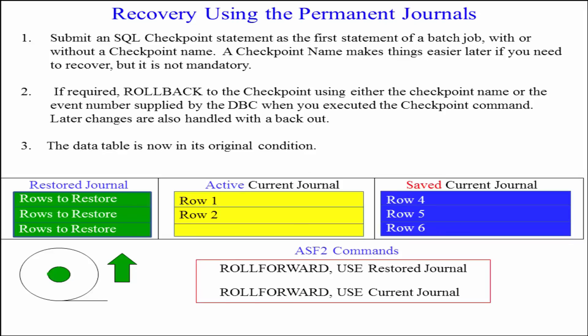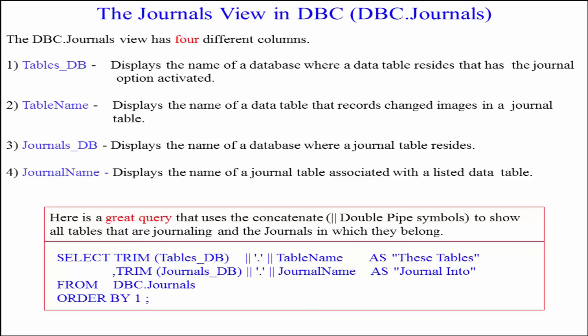As you can see here, we've actually got the ASF2 commands you can use. Here is a great query that uses the concatenate or double pipe symbol to show all tables that are journaling and the journals in which they belong. Notice it's from dbc.journals — that is a system table, also called the data dictionary directory. The dbc.journals view has four different columns: Tables_DB displays the name of the database where a table resides that has a journal option activated; Table Name displays the name of a data table that records changed images in a journal table; Journals_DB displays the name of a database where a journal table resides; and Journal Name displays the name of a journal table associated with a listed data table.